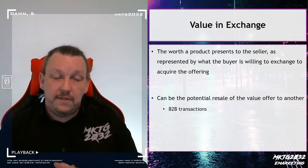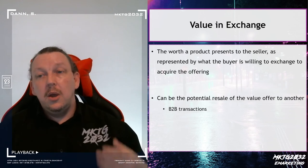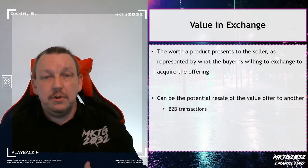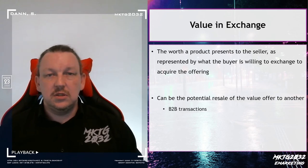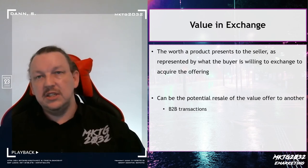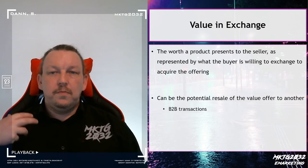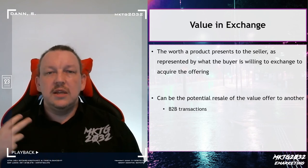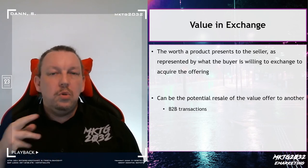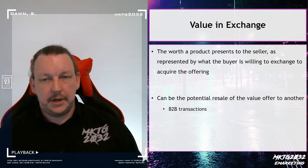The second type of value is value in exchange — the worth of an object being what you can get for it in a transaction. This covers business to business, going out shopping to resell things on eBay, buying something to use as a gift, or buying something to use as barter. It's about what can I get from this in a transactional exchange with someone else — not what I can do with it, but what I can get for it.